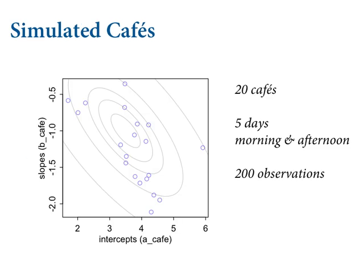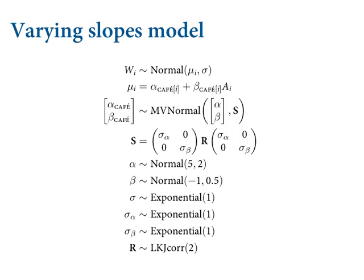Now let's do some work with this. I'm going to simulate from a population of cafes — the code is in the book. You simulate the journey of your coffee robot, which goes around and orders coffees, giving us a finite sample of morning and afternoon wait times for 20 different cafes on five different days, morning and afternoon, so ten data points per cafe. That's a very small sample, so we'll do pooling and program the robot with a varying slopes model.